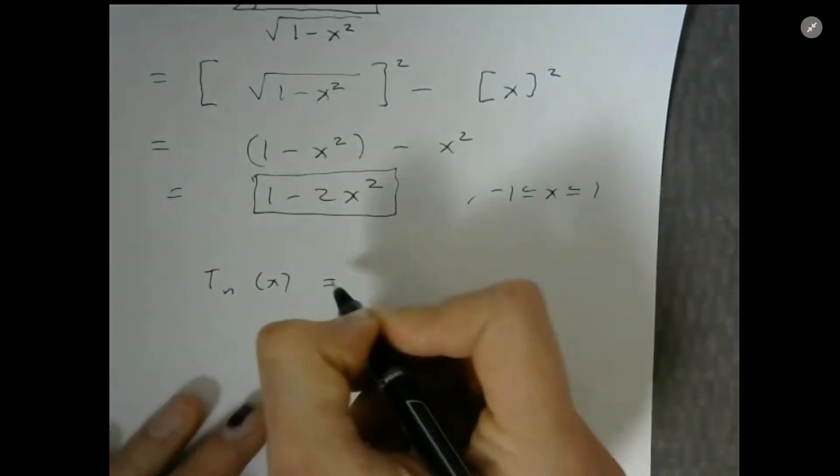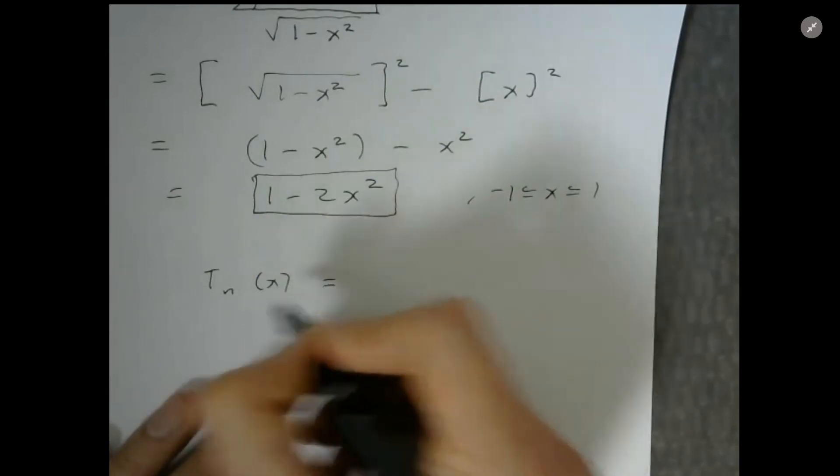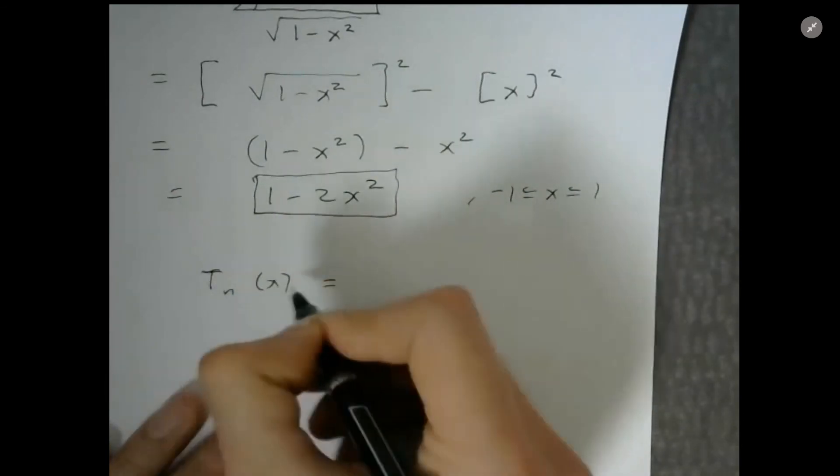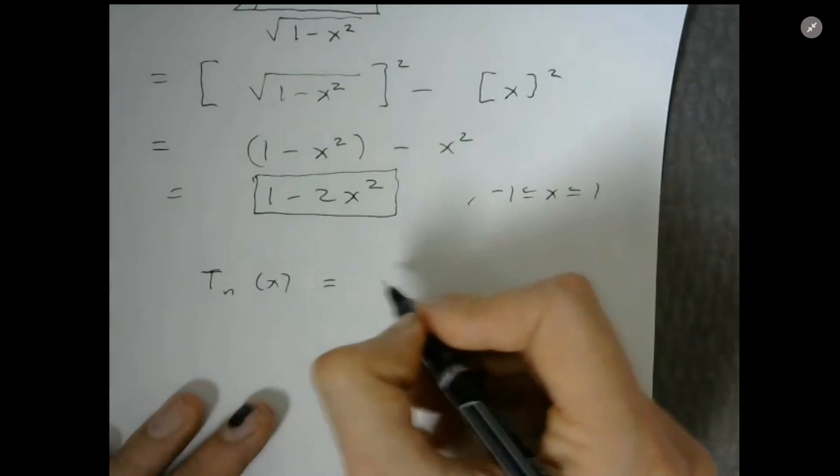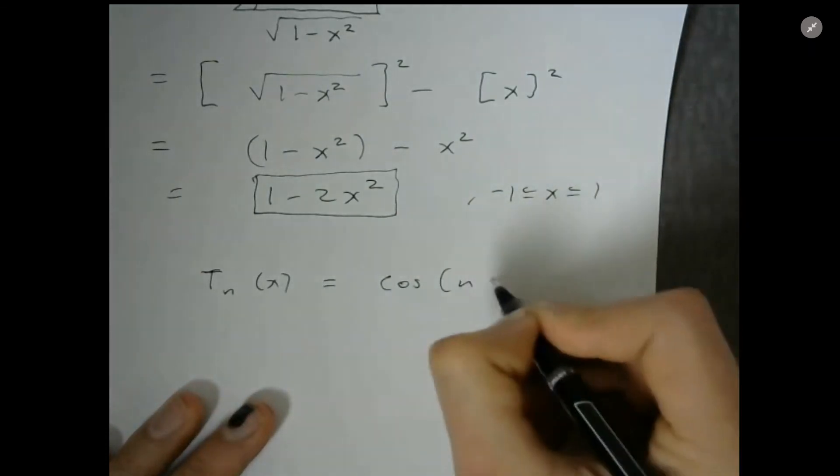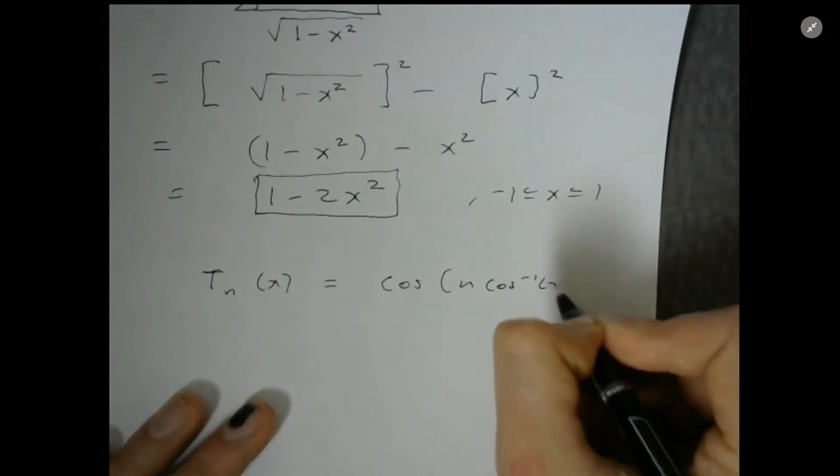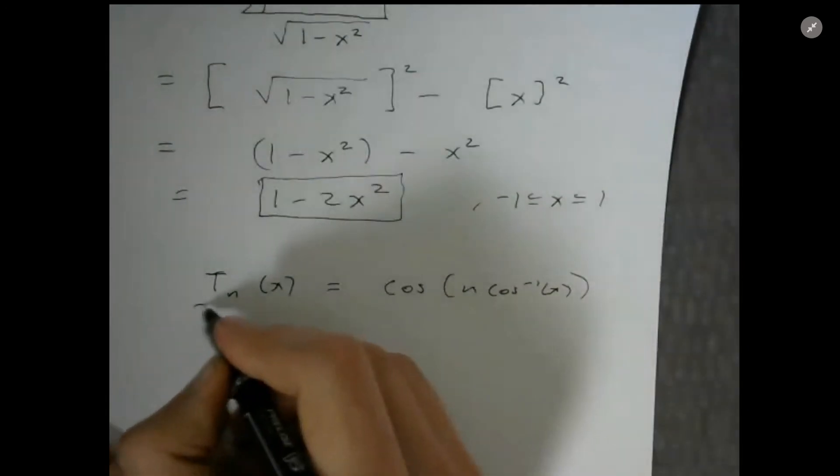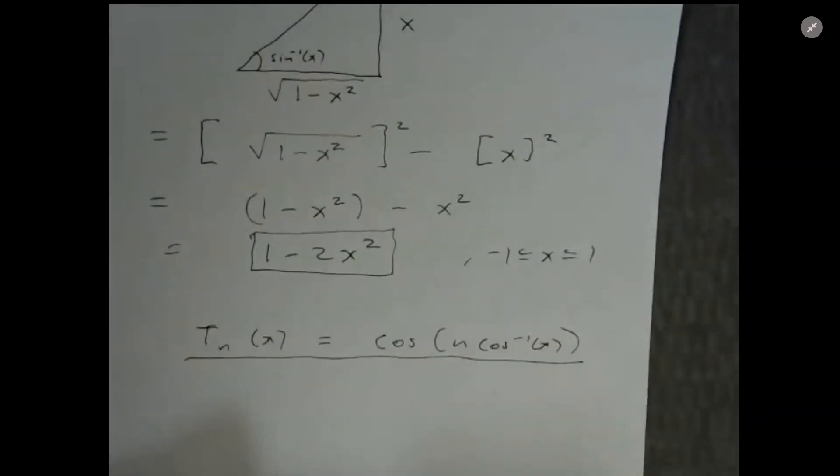And just as a challenge, you can try to calculate what these are by this recursive relationship: the nth Chebyshev polynomial is given by cosine of n arccosine of x. So you can try to calculate those as an exercise.